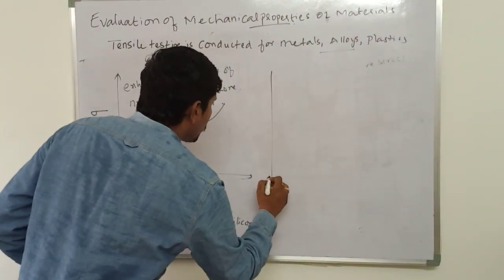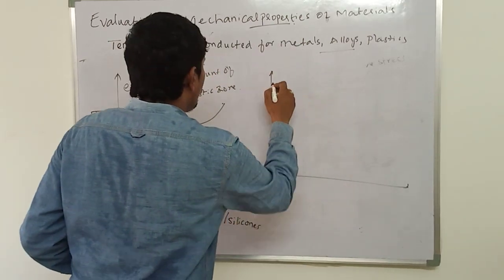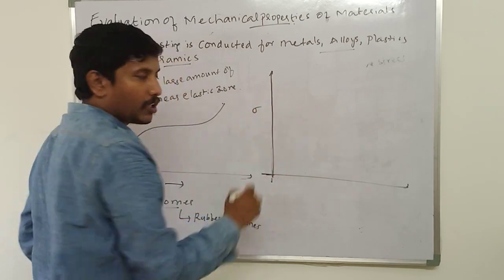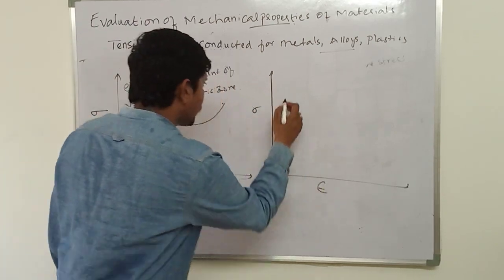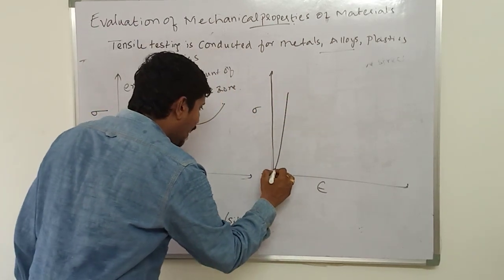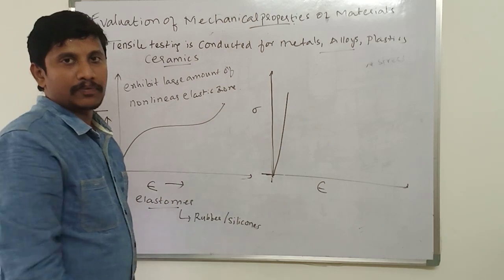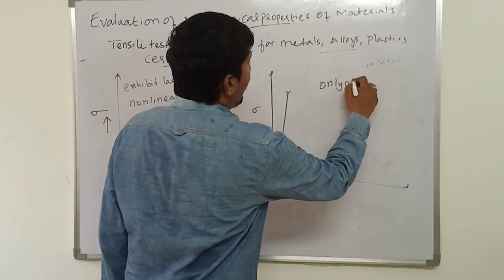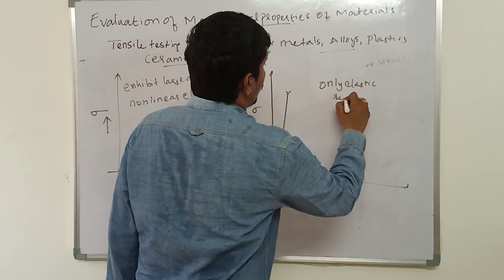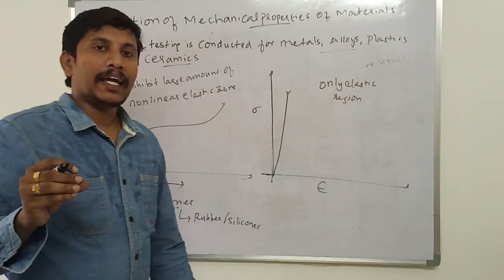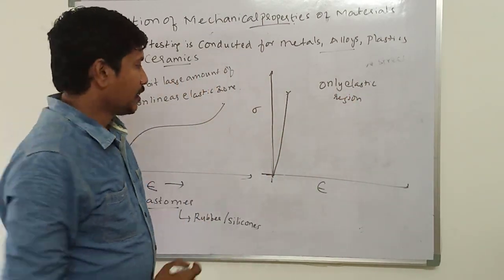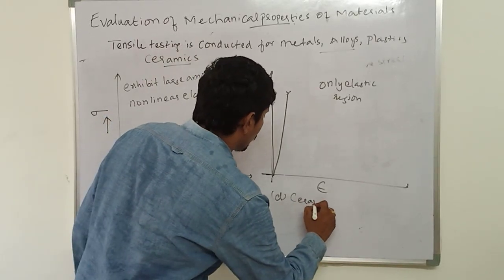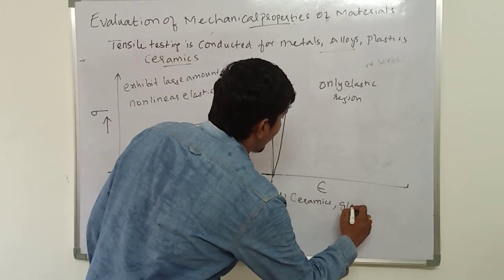If you look at the typical stress-strain curve for a brittle material, with stress on the y-axis and strain on the x-axis, it exhibits only the elastic region, with no plastic zone. This is a typical stress-strain curve for ceramics and glass.